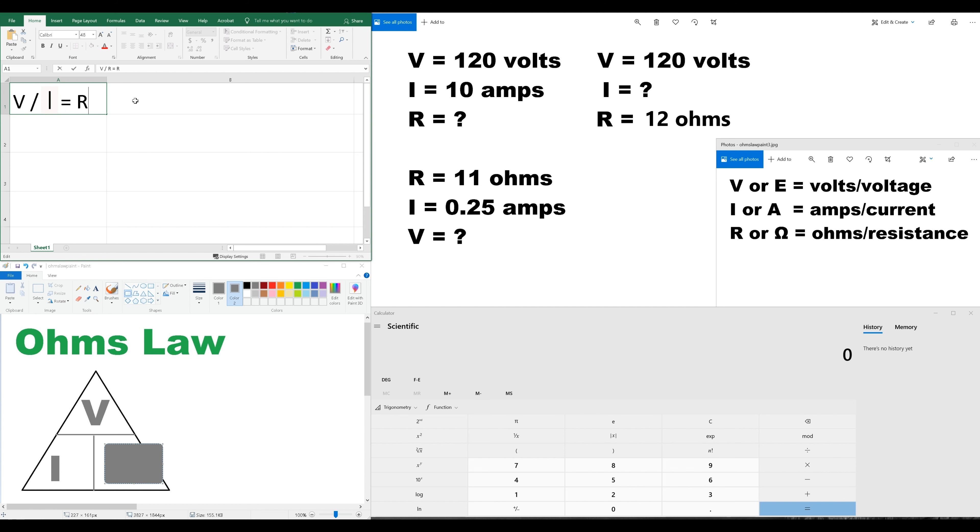Okay, V over I, right? So that's going to actually turn out to be 120 volts over 10 amps equals R. So, R equals, let's find out, 120 divided by 10 is going to give us 12 ohms.